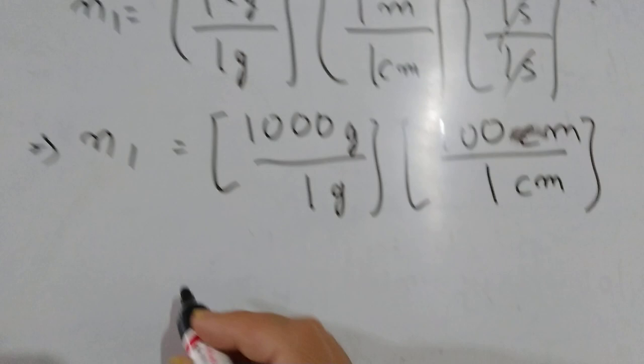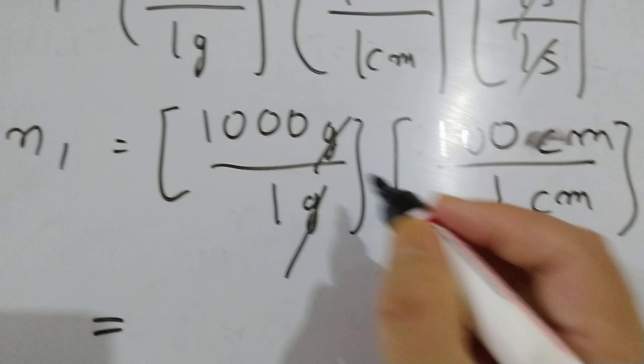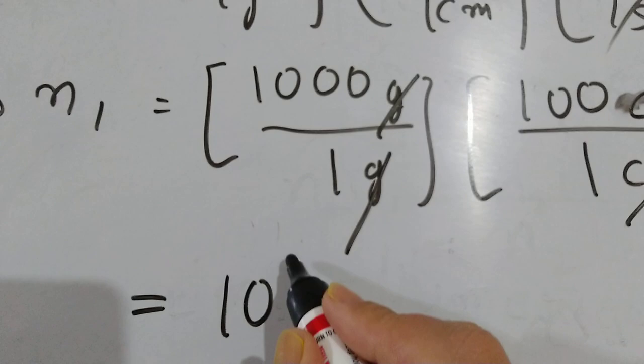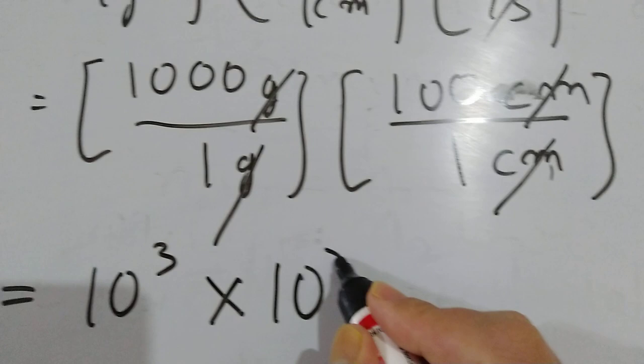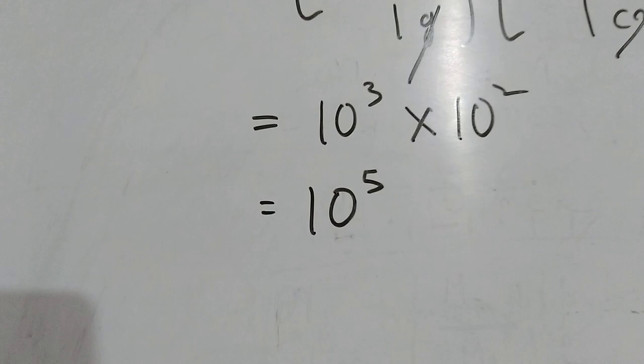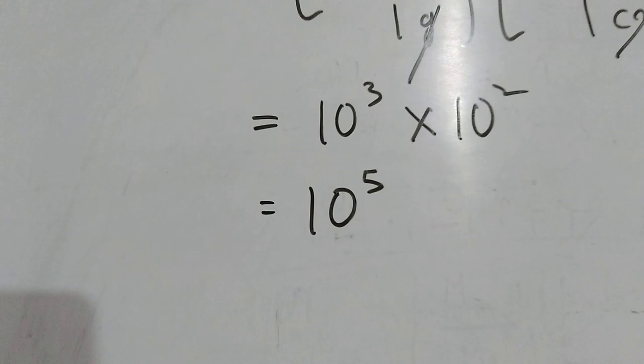Substituting the values: gram over gram, and centimeter to meter gives 100, so centimeter over centimeter gives one hundred. The time ratio squared gives another factor. This simplifies to 10 to the power 5. Therefore, 1 Newton in SI equals 10^5 Dyne in the CGS unit system.